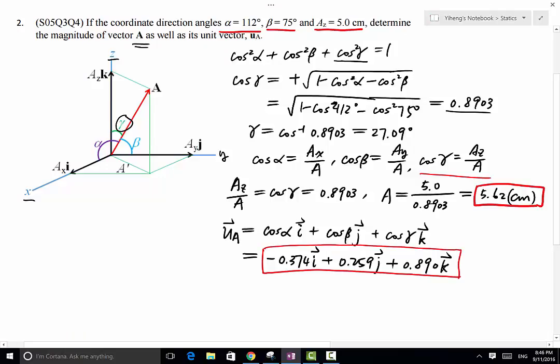It's important to know that the unit vector is dimensionless. Because unit vector equals to the vector A divided by its magnitude, and in this case both the vector A and its magnitude have the unit of centimeter. Therefore the centimeter always cancel out. Therefore unit vector itself is dimensionless.